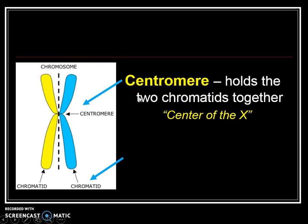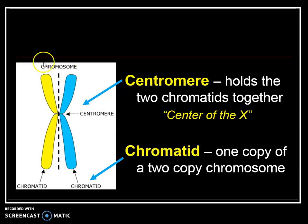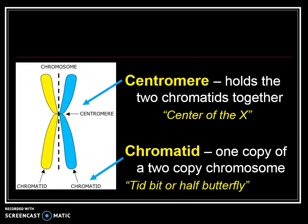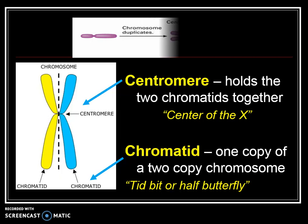The centromere is also where the two chromatids are held together. A chromatid is like half of a butterfly or a butterfly wing — the yellow and the blue each are a chromatid. I think of it as a tidbit: it's half of the butterfly. Chromatid — tid, bit. We'll practice all these words in class. Now let's jump in to learn more about the cell cycle and specifically mitosis.